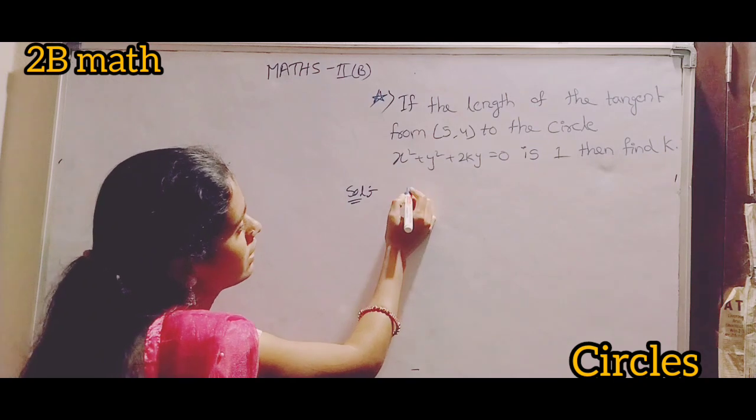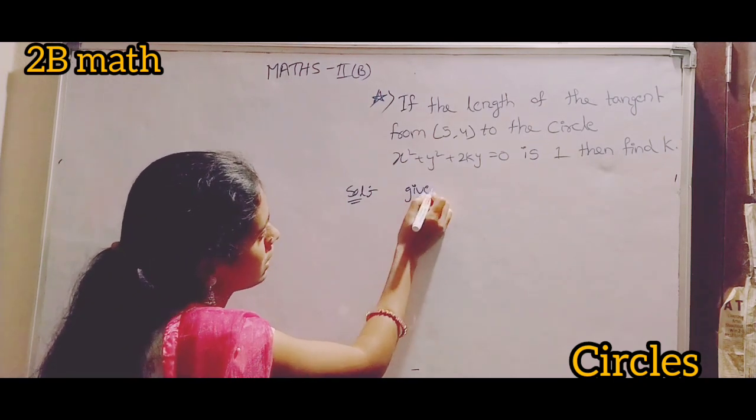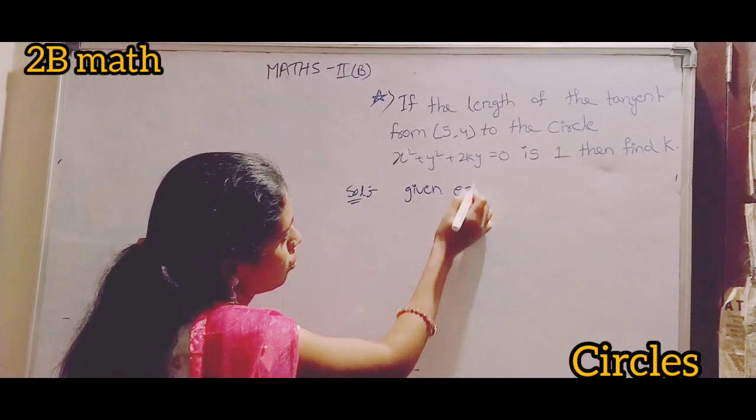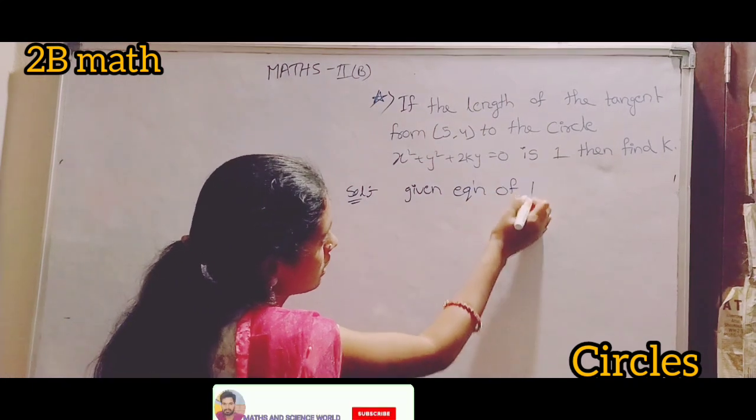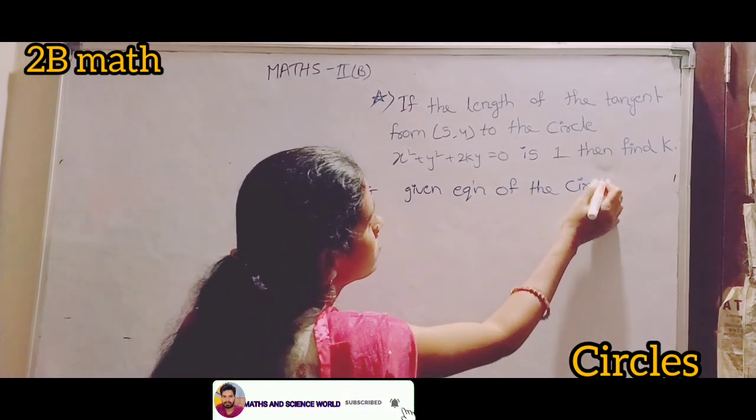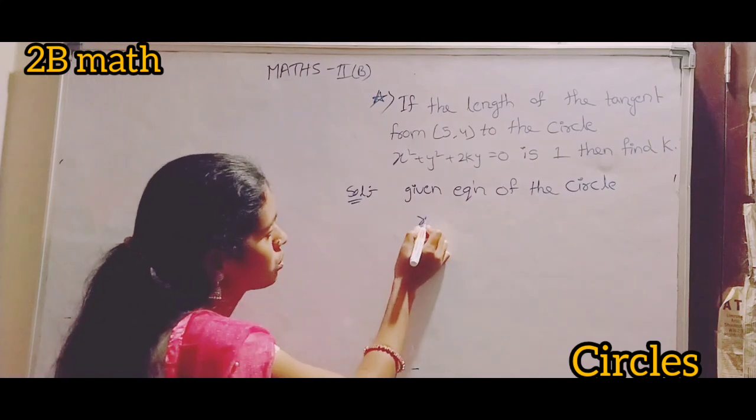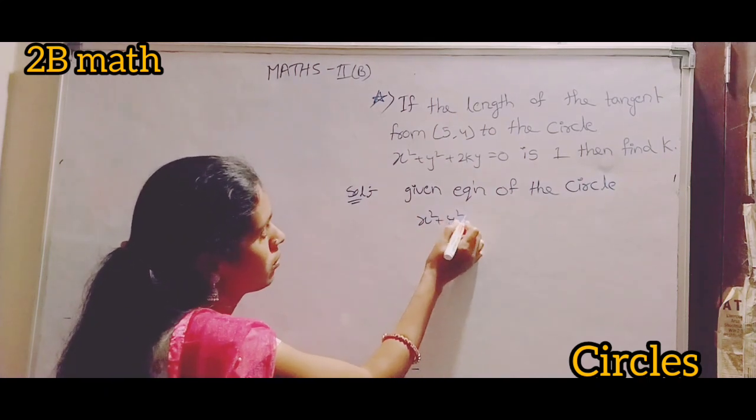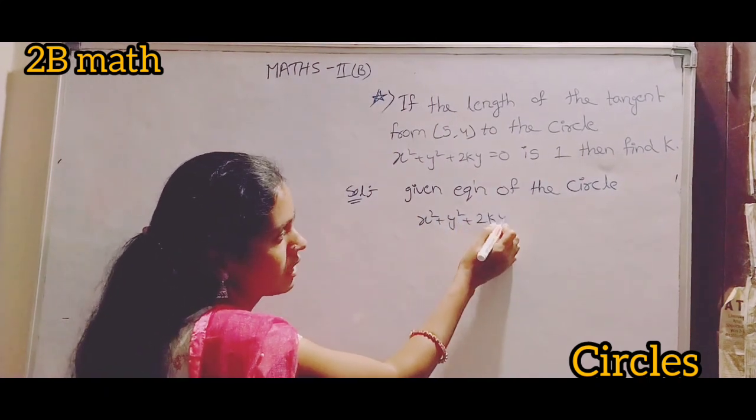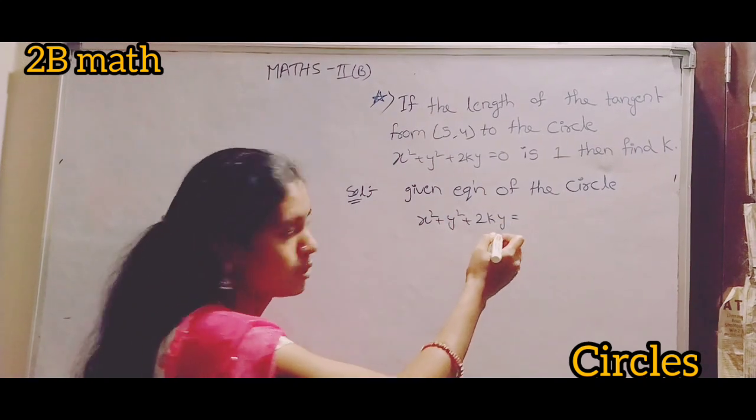Solution. Given equation of the circle: x² + y² + 2ky = 0.